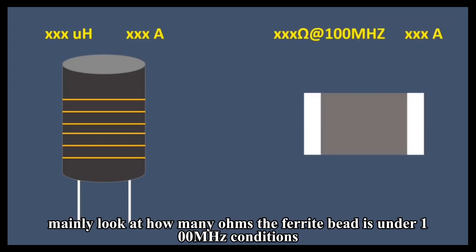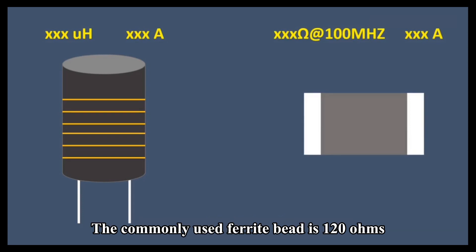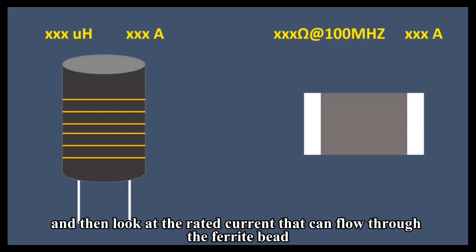When choosing a ferrite bead, mainly look at how many ohms the ferrite bead is under 100 MHz conditions. The commonly used ferrite bead is 120 ohms, and then look at the rated current that can flow through the ferrite bead.